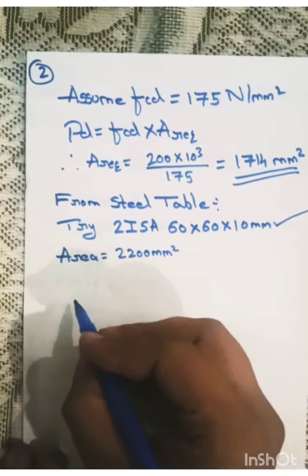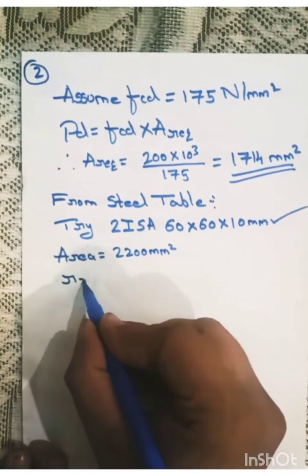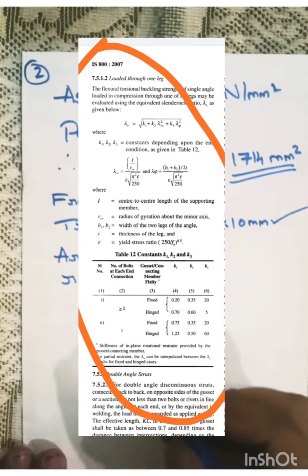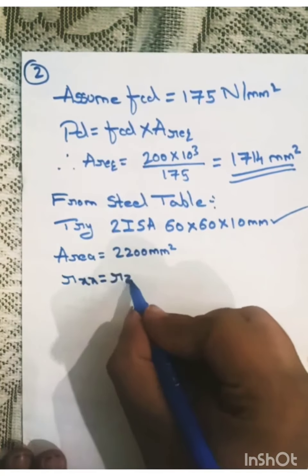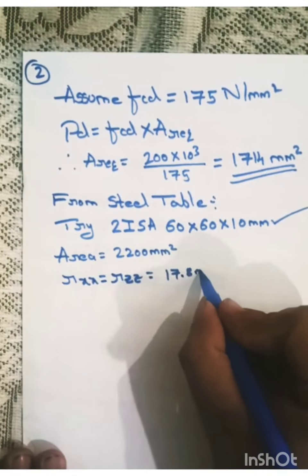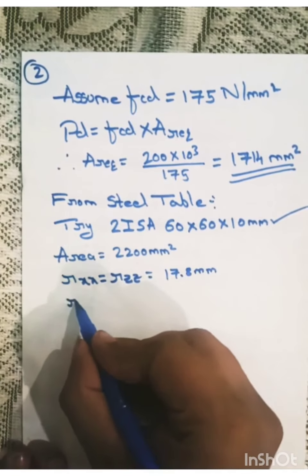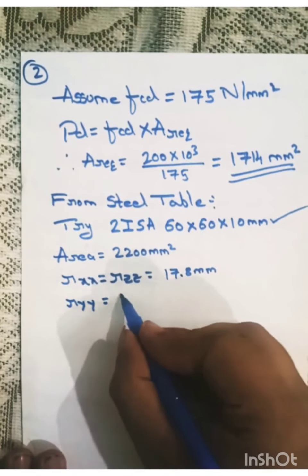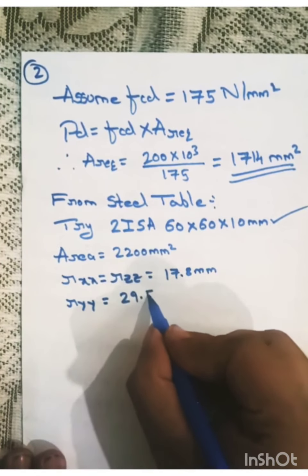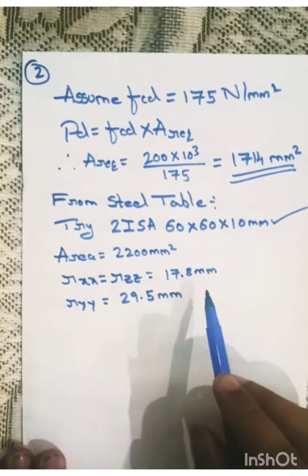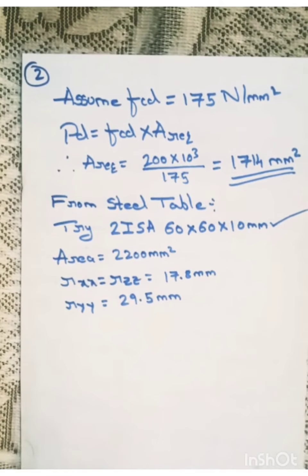I will check what is radius of gyration. That is RXX. RXX for double angle or RZZ is 17.8 mm. And RYY is 29.5 mm. So RXX here, it is 17.8 and RYY is 29.5 mm.